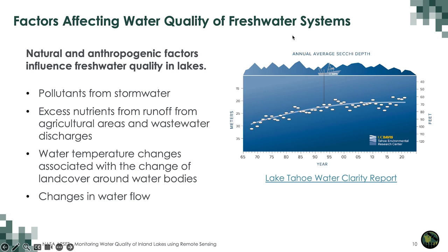One example is Lake Tahoe, which shows annual average Secchi depth as an indicator of water quality. The deeper you can see into the water, the clearer the water is. Starting from 1965 all the way to 2020, there is a trend showing that water clarity is decreasing — Secchi depth is decreasing.